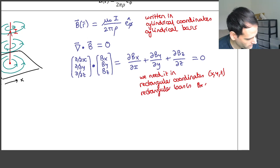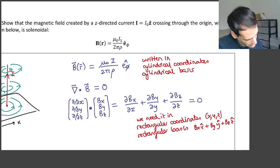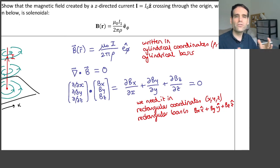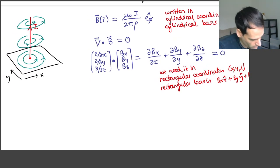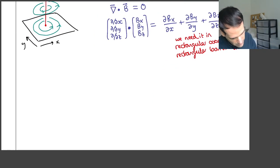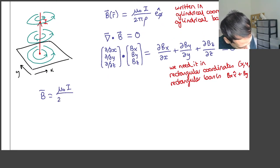We need the components Bx, which is the x̂ component, By, which is the ŷ component, and Bz, which is the ẑ component. So we need to convert from cylindrical (ρ, φ, z) and cylindrical basis into rectangular coordinates and rectangular basis. The problematic terms are ρ and φ̂; the rest are constants we can take outside.